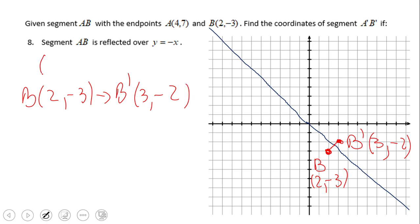So basically now we're going to get the rule: (x, y) becomes (-y, -x). In other words, besides switching or interchanging x and y, we also have to change the sign. So let's see point A now: (4, 7) becomes A prime at (-7, -4).